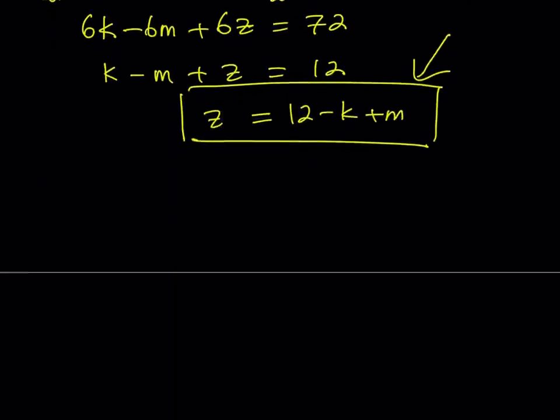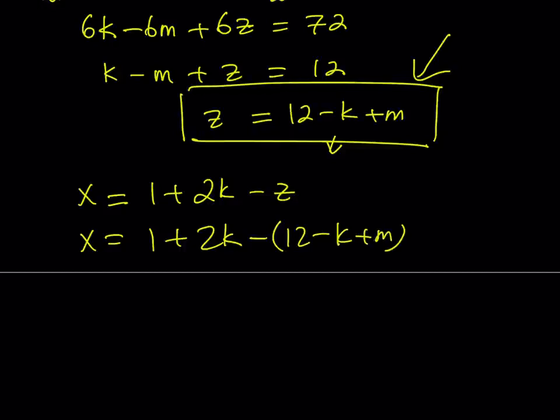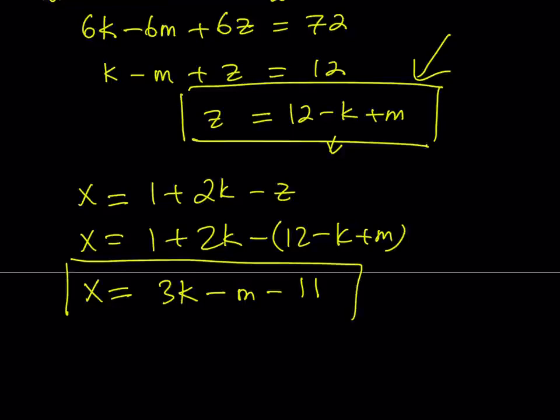So let's go ahead and do that. I have x equals 1 plus 2k minus z. And let's go ahead and replace z with what it is here. Minus, let's write that in parentheses and then simplify that. Let's go ahead and simplify this expression. Let's see what happens. So if you simplify, you get 1 minus 12, and that's negative 11. 2k plus k is going to be 3k. Minus m, because m is positive, but we're going to negate it. 1 minus 12 is going to be negative 11. So that's my x value.